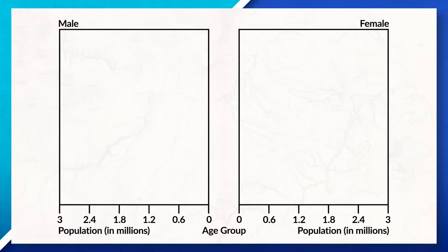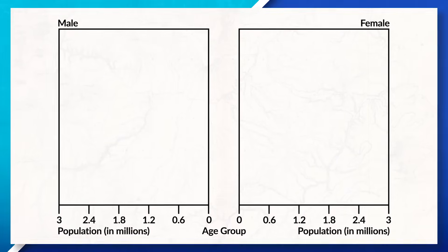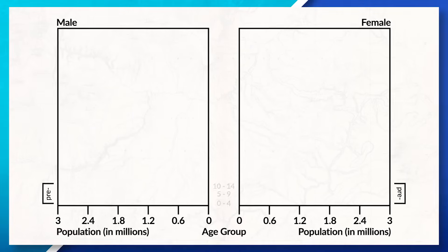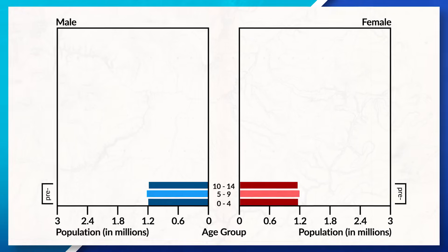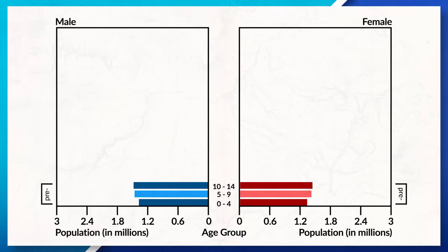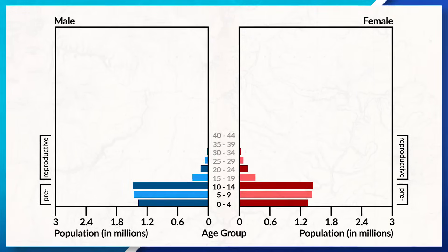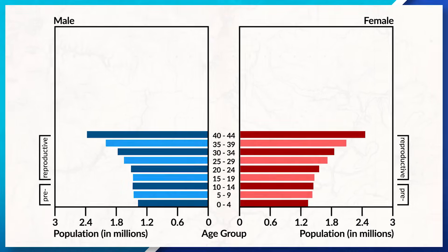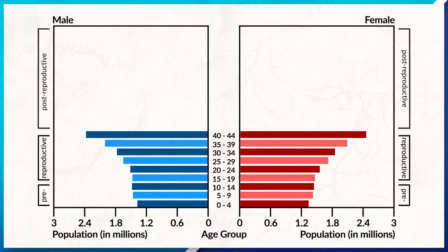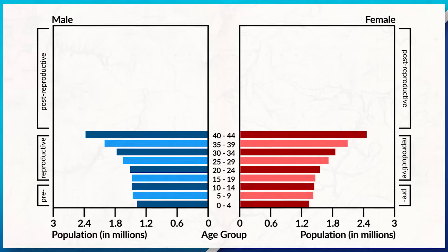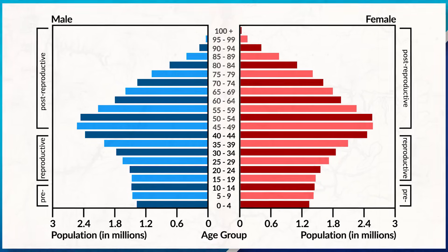Now that we understand some of the basics of these pyramids, let's delve deeper into what they can really show us about a society. Starting with the different age cohorts, we have pre-reproductive years, which are 0 to 14 years old; the reproductive years, from 15 to 44 years old; and lastly, the post-reproductive years, which is 45 years and up.